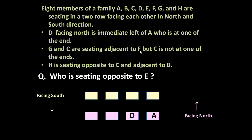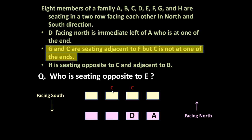Second statement: G and C are sitting adjacent to F, but C is not at one of the ends. So G, C and F are sitting together. Here only two positions are left, so G and C are on this side. Since G and C are adjacent to F, F is at the center. But C is not at the end, so C can occupy this position or that position. If C is here, F will be here and G will be here; if C is here, F will be here and G will be here. We will determine C's exact position next.